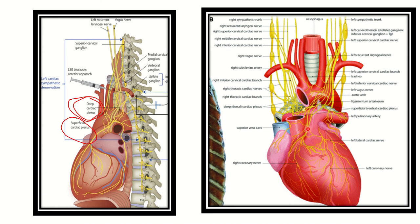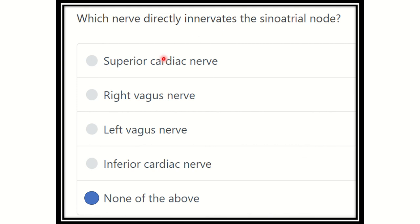The sinoatrial node does not get supply directly from the right vagus nerve or left vagus nerve. It receives its innervation from the cardiac plexus, which is derived from the right vagus. The right vagus nerve supplies the SA node, but not directly — it first divides into the plexus, and then innervates the sinoatrial node. Sometimes the left vagus nerve also contributes, but this is minimal.